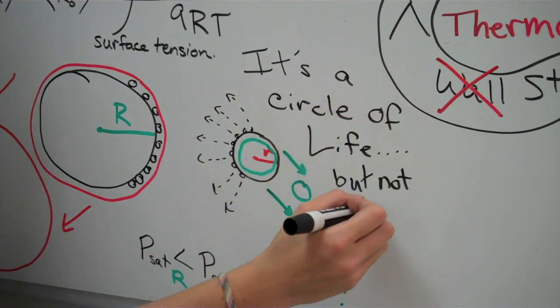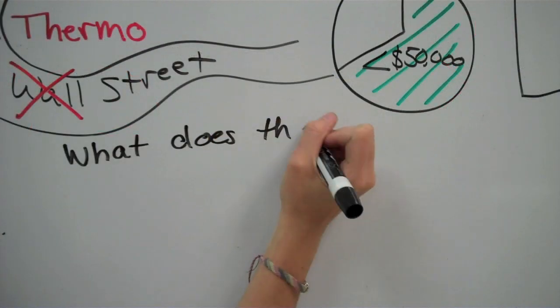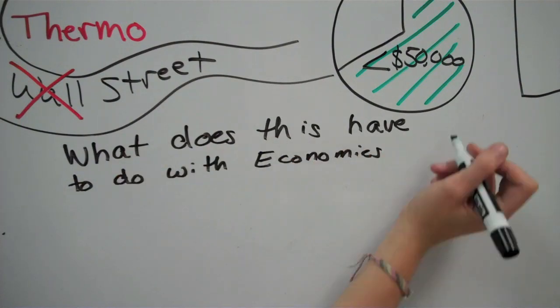It's the circle of life for the droplets, and it's a droplet-y droplet world. So what does this have to do with economics?